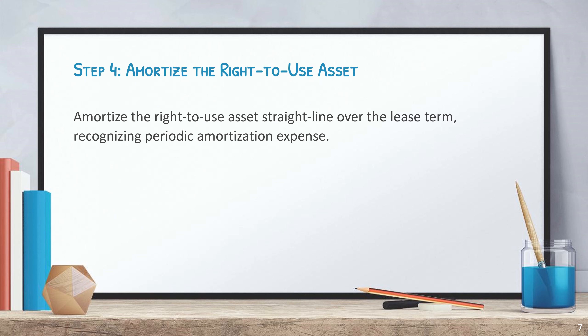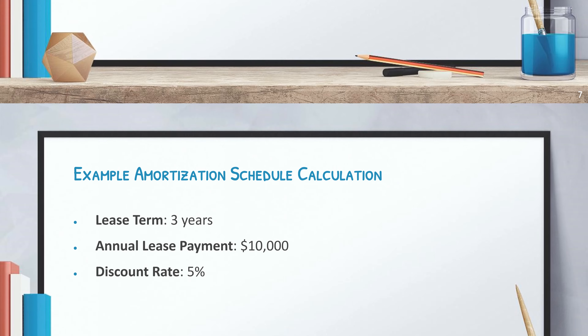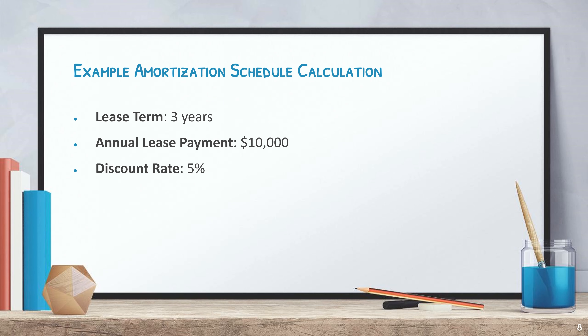Step four: amortize the right-to-use asset straight-line over the lease term, recognizing periodic amortization expense.